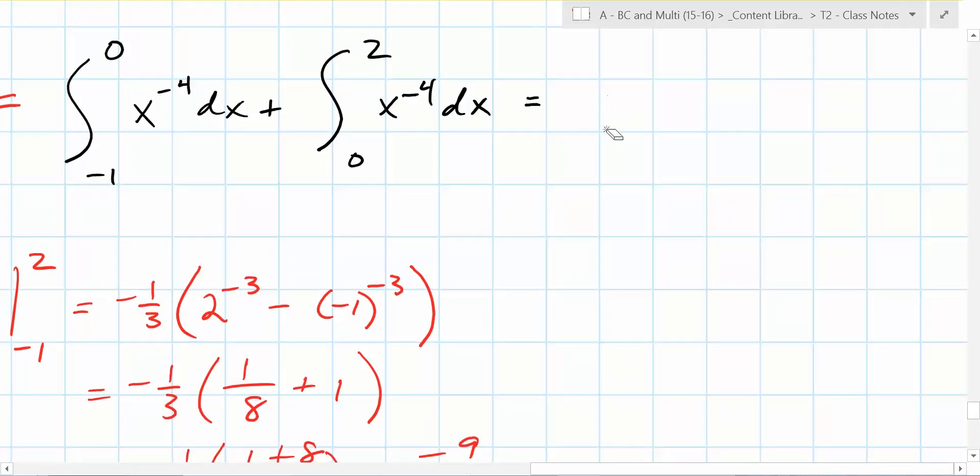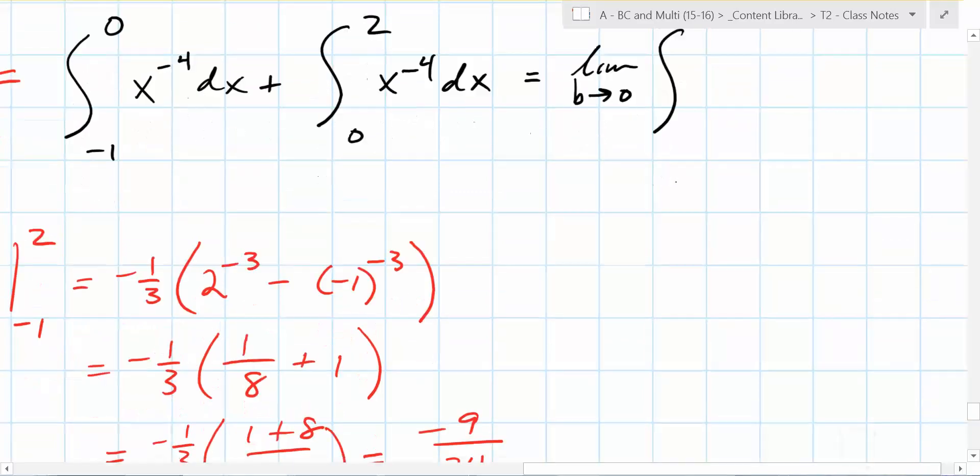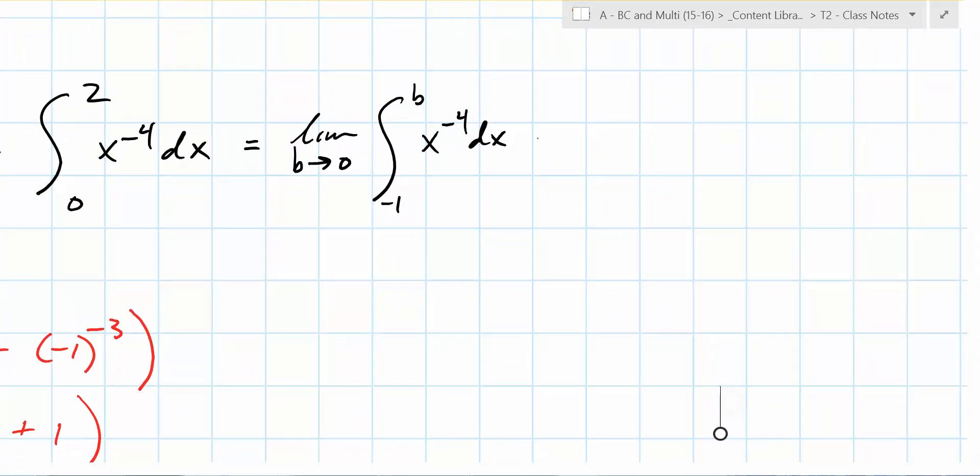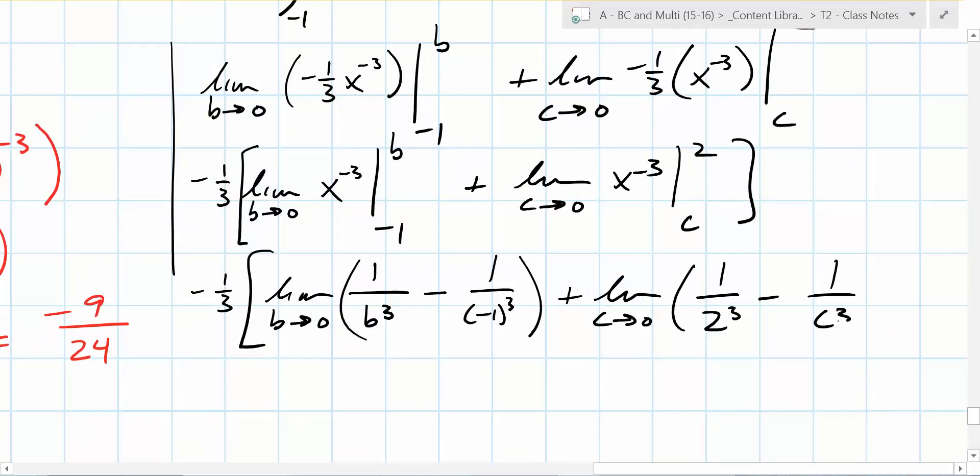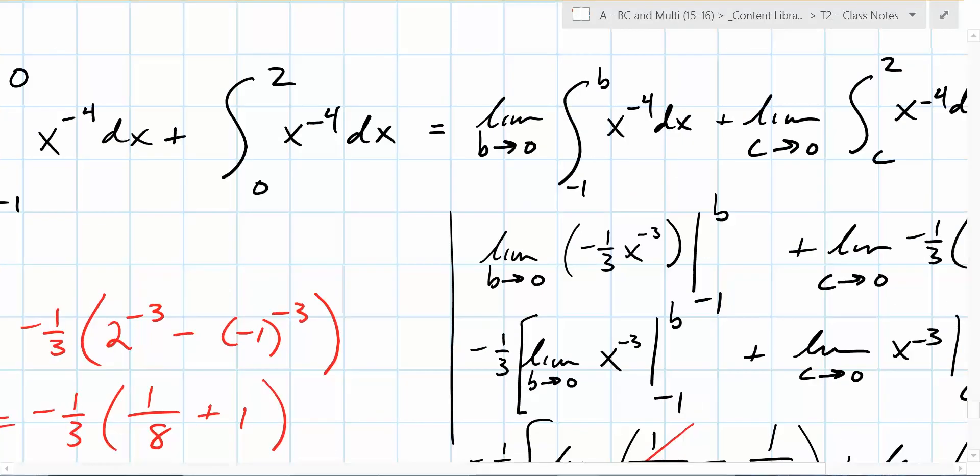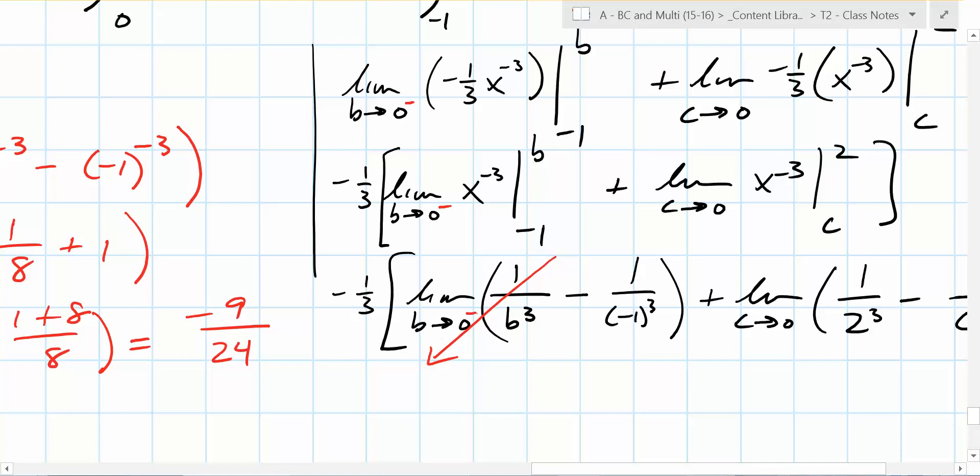So it's going to be the limit as b goes to zero of the integral of negative one to b of x to the negative fourth dx. And then what's next? Plus the limit as c goes to zero of c to two of x to the negative fourth dx. One over two to the third minus one over c to the third. So what's the problem? What do these go to? What does this one go to right here? As b goes to zero, what does that go to? Oh, and here's the other thing. We have to be really specific. We're approaching zero from what side? This is zero from the left. So it's going to be from the left. So if we approach from the left, what does that mean this is going to? Negative infinity, right?